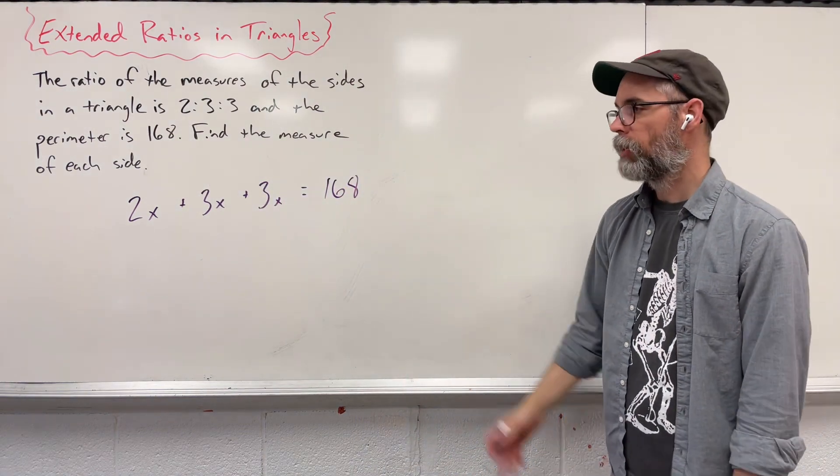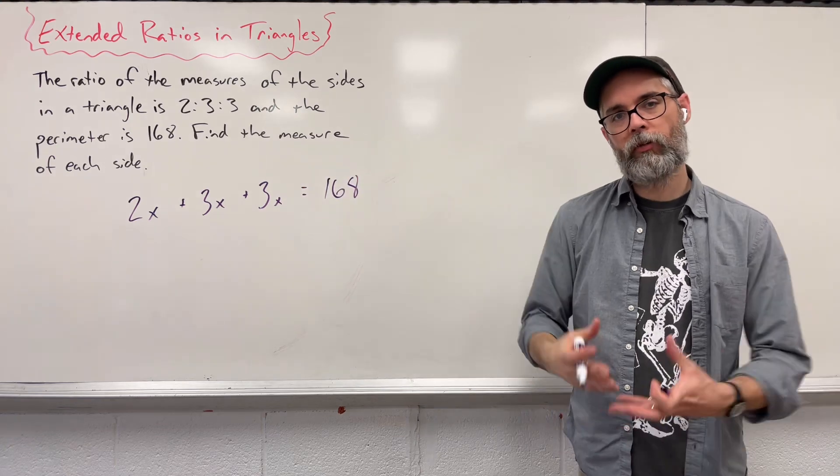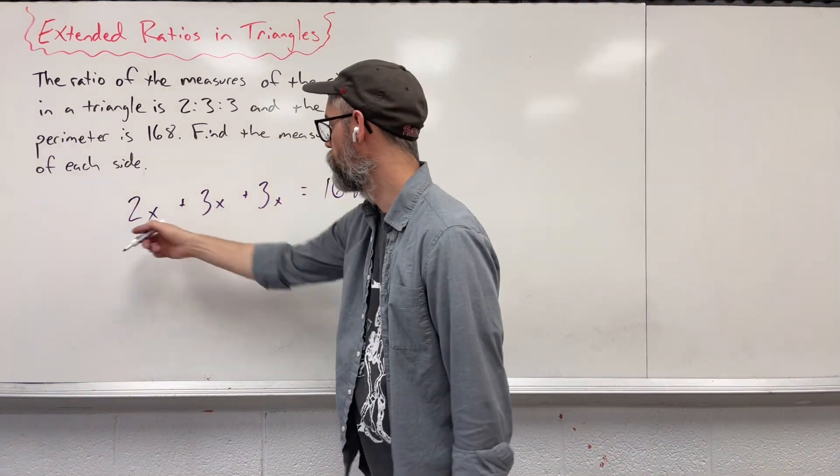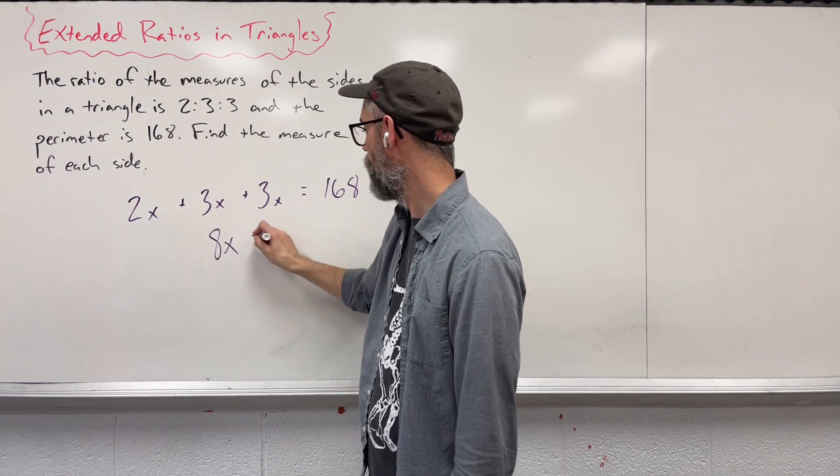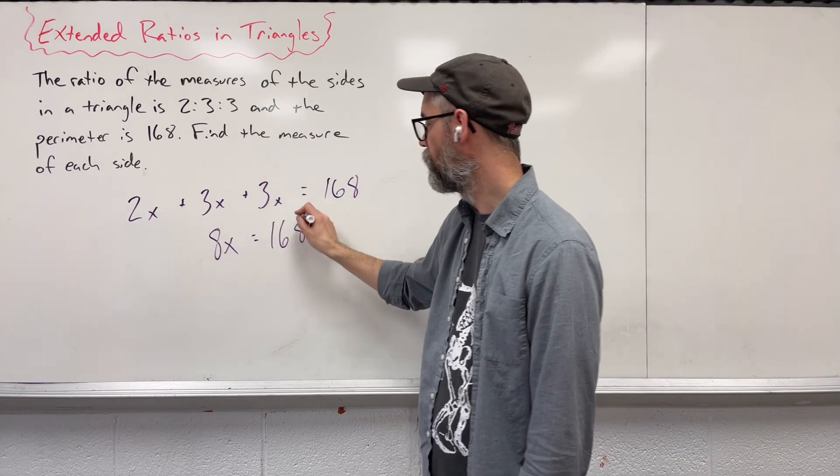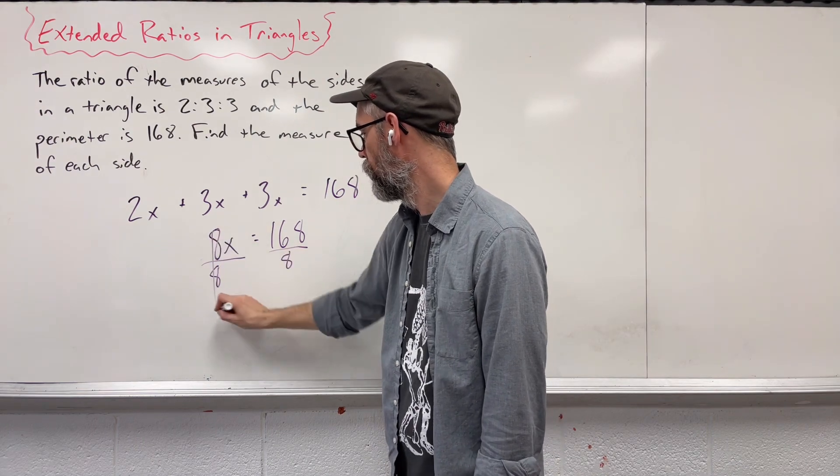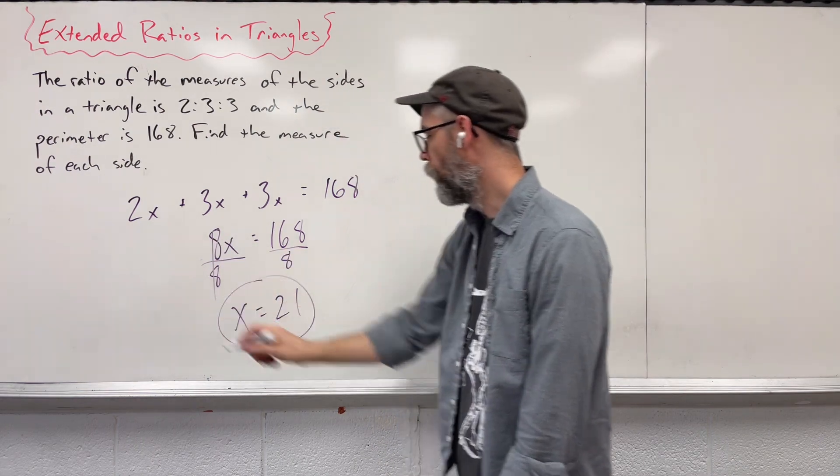Okay, so that's the equation. Now we just combine like terms, inverse operations, and all that fun stuff. So 3 plus 3 plus 2 gives us 8x equals 168. Divide by 8. X ends up being 21.